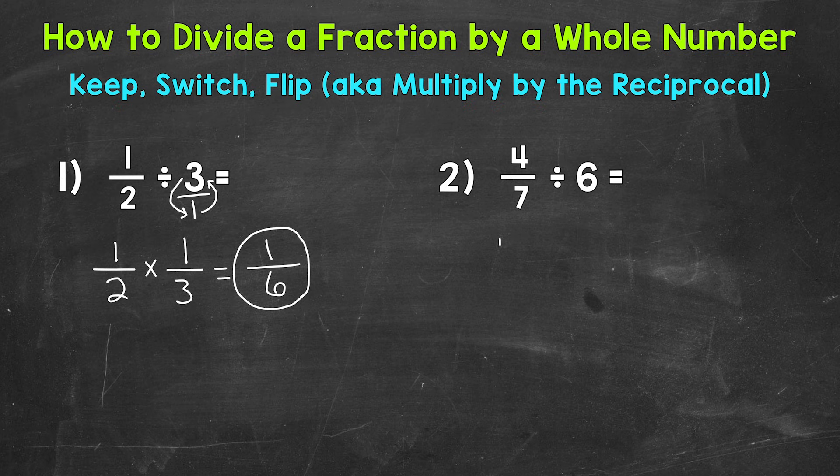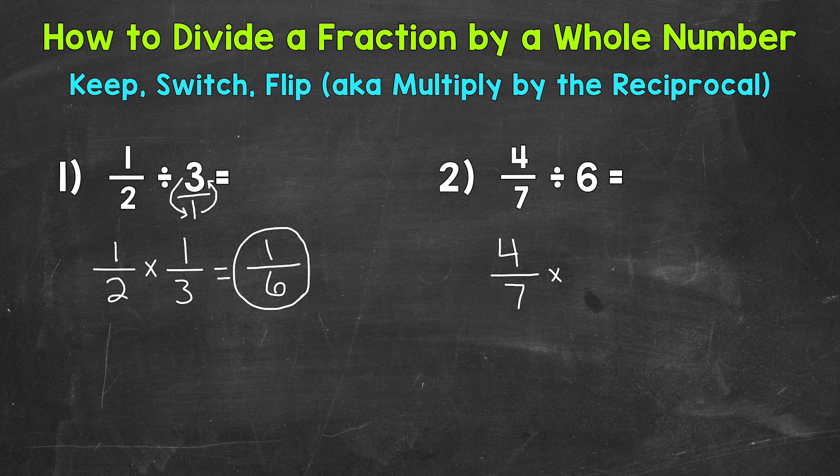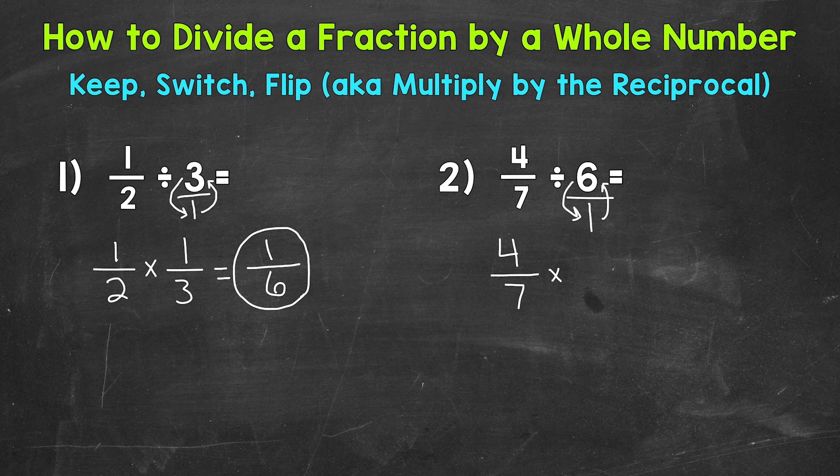So let's rewrite the problem. Keep 4/7. Switch to multiplication. And then we need to flip. So we can write that six in fractional form. And now we can flip. So the one is now our numerator and the six is now our denominator.